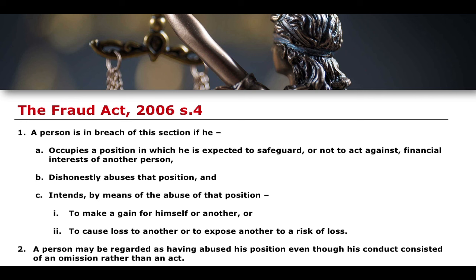Fundamentally, this is very similar to the other two examples. The mens rea for fraud by abuse of position is essentially exactly the same — it requires dishonesty and an intention to make a gain for himself or another, or to cause loss to another, or to expose another to a risk of loss. Both of those are the same as Sections 2 and 3. The difference, of course, is the actus reus: first, occupying a position in which you are expected to safeguard and not act against the financial interest of another person, and second, abusing that position. Those are the two actus reus elements, combined with dishonesty and intent to make a gain or cause loss.